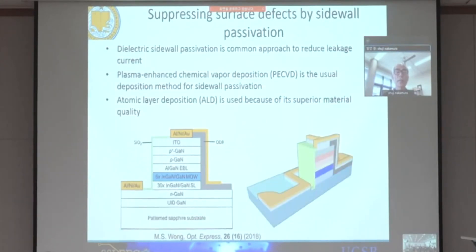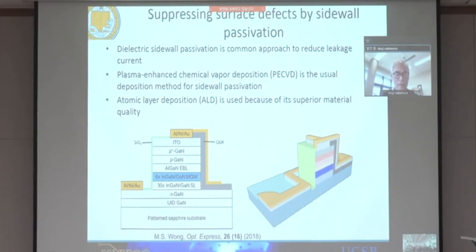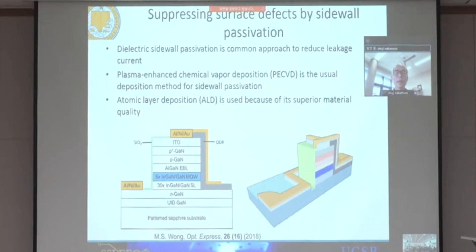This is the UCSB LED chip structure. Using this structure, we can make smaller size chips. Conventionally, the sidewall was passivated using deposition of dielectric materials by plasma-enhanced chemical vapor deposition (PECVD). But PECVD was not good for passivating the sidewall because PECVD caused sidewall damage. UCSB found that atomic layer deposition (ALD) is the best method to passivate the sidewall. Using ALD, even when the chip sidewall is very small, the external efficiency is very good.